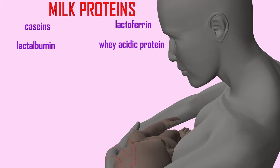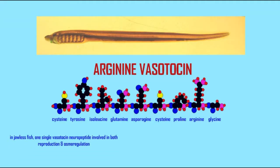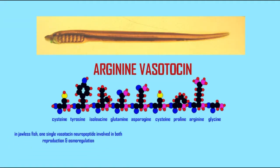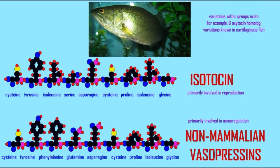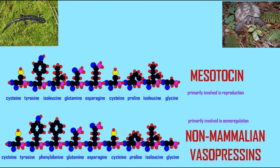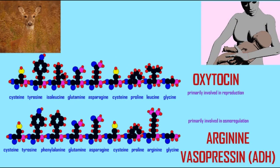So while versions of oxytocin exist in more primitive organisms, because these hormones have multiple roles, they are clearly very important to mammals, given that the ejection of milk and the contraction of uterine muscle for live birth are some defining features of mammals and the placental mammals.